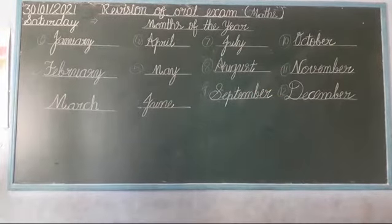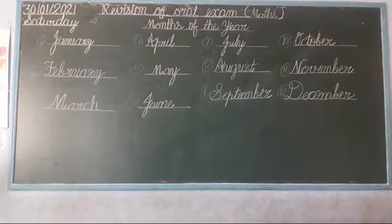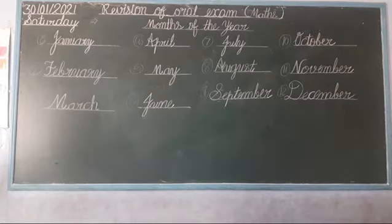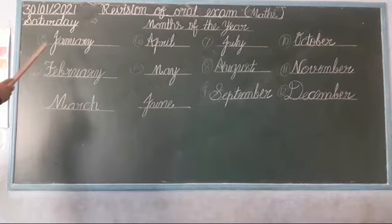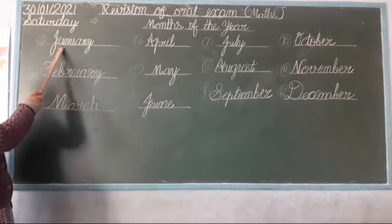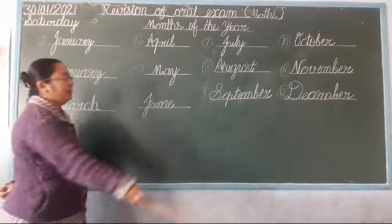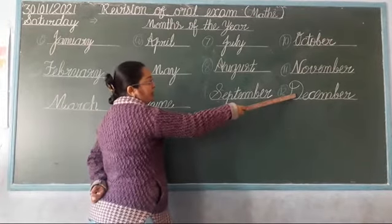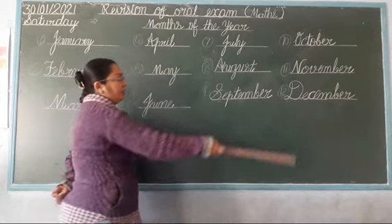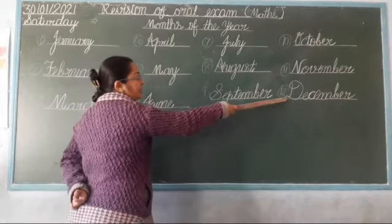So how many months are there in a year? 12 months. कितने months होते हैं? 12 months होते हैं. Which one is the 1st month of the year? पहला महीना कौनसा होता है साल में? January. And the last month of the year is December. लास्ट महीना साल में December है.